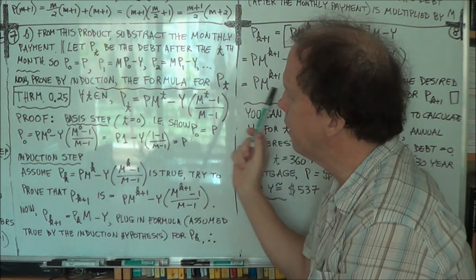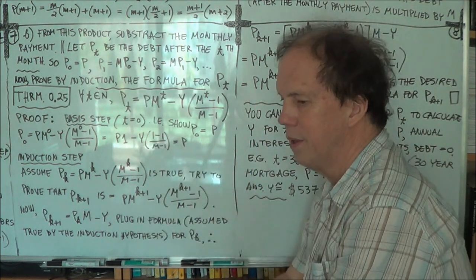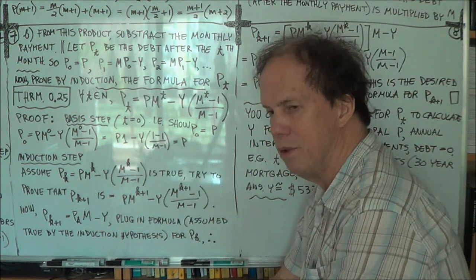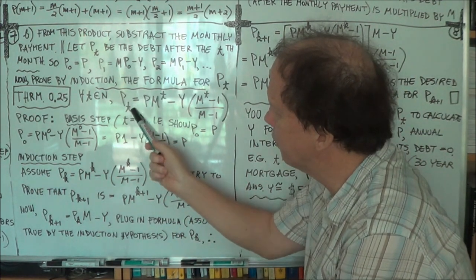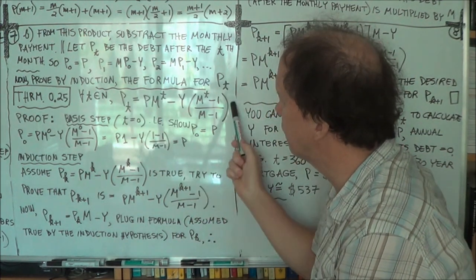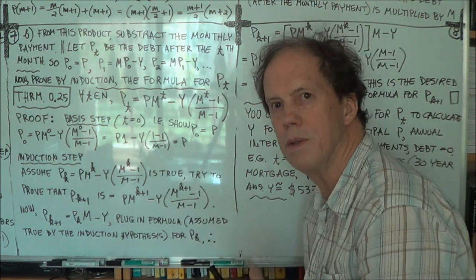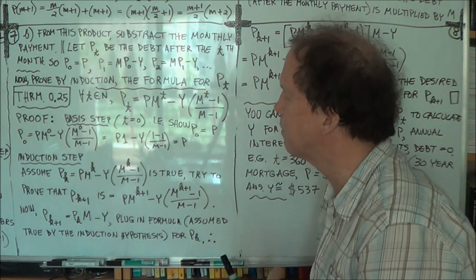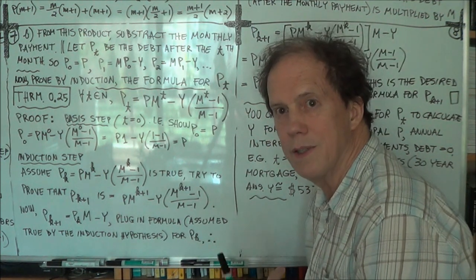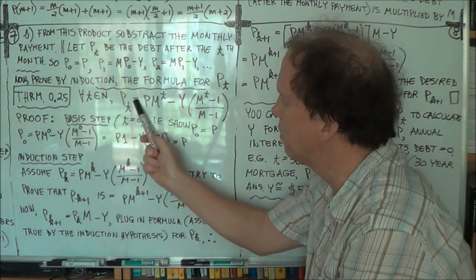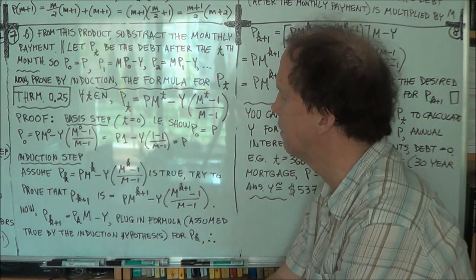The exercise now is to use proof by induction to prove this formula. We'll use the two steps — the basis step and the inductive step — to show that this formula is actually correct.